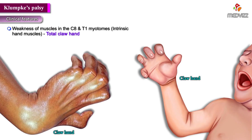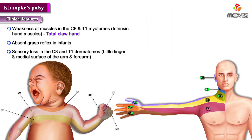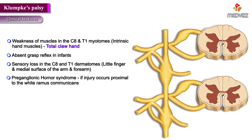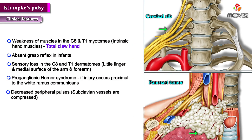Clinical features: Weakness of muscles in the C8 and T1 myotomes, resulting in weakness of intrinsic hand muscles, results in a total claw hand. There is an absent grasp reflex in infants. Sensory loss occurs in the C8 through T1 dermatomes, along the little finger and the medial surface of the arm and forearm. Pre-ganglionic Horner's syndrome also occurs if the injury occurs proximal to the white ramus communicans. There is decreased peripheral pulses if subclavian vessels are compressed by a Pancoast tumor or a cervical rib.